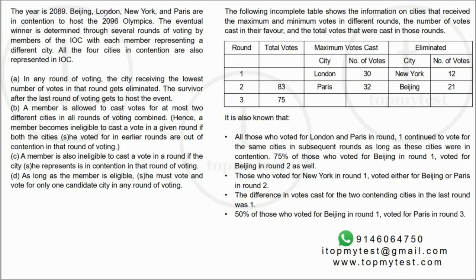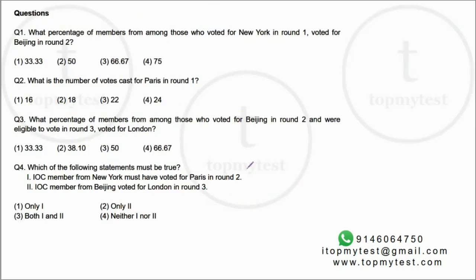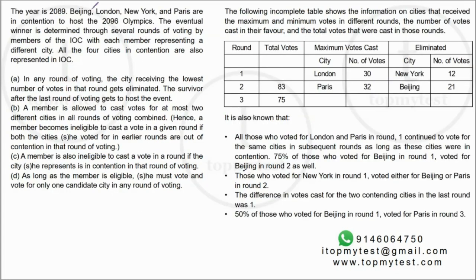Set 64: The year is 2089. Beijing, London, New York, and Paris are in contention to host the 2096 Olympics. The eventual winner is determined through several rounds of voting by the members of the IOC, with each member representing a different city. All four cities in contention are also represented in the IOC. Looking at the questions, there are four straight questions: percentage of votes, number of votes cast, which statement must be true — we'll come to these after reading the set.